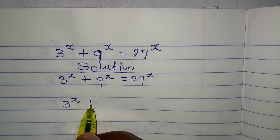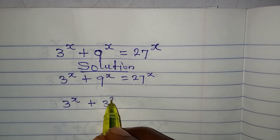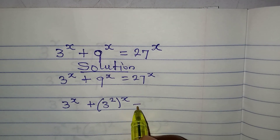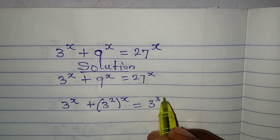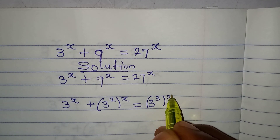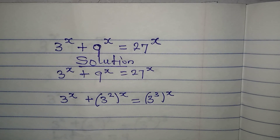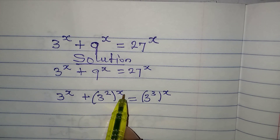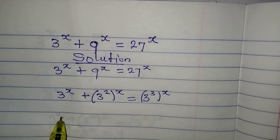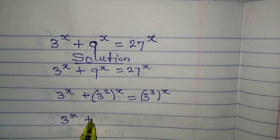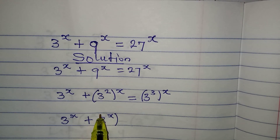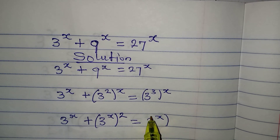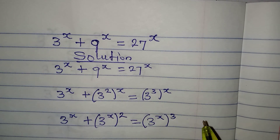We have 3 to the power of x, plus 9 — which is 3 squared — to the power of x, equal to 3 to the power of 3, to the power of x. Changing the power: 3 to the power of x plus 3 to the power of 2x equals 3 to the power of 3x.